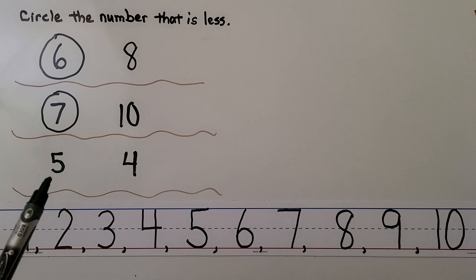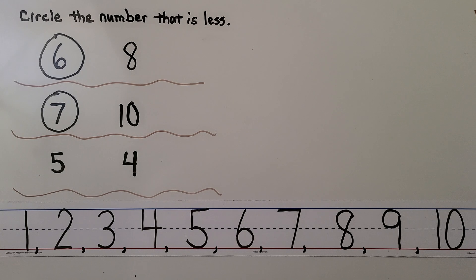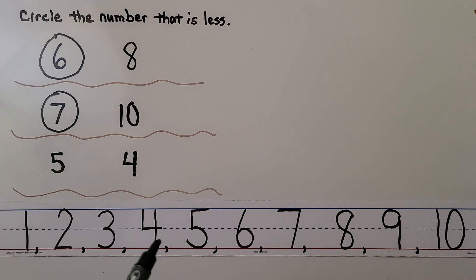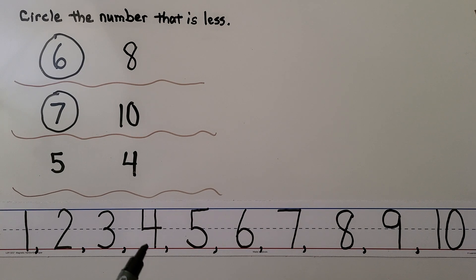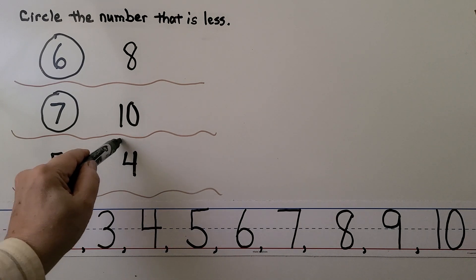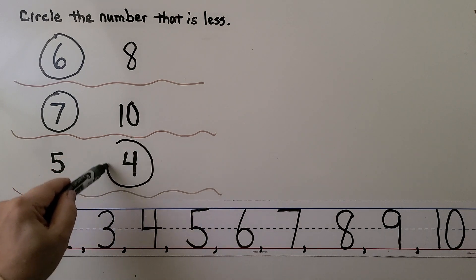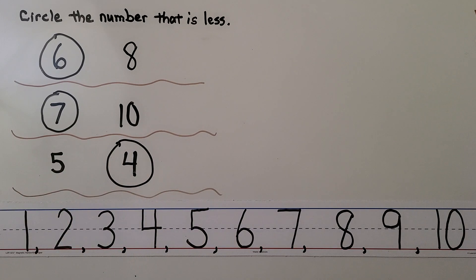What about the pair five and four? Which number is less — five or four? Four comes first and then five. If you said four is less, you're correct. When a number comes first, it's less than the other number. And less means fewer, not as many.